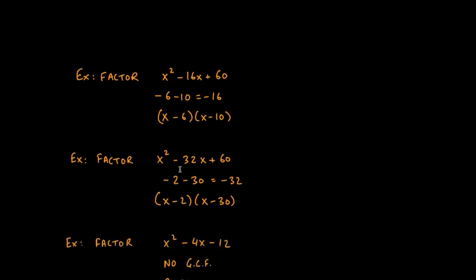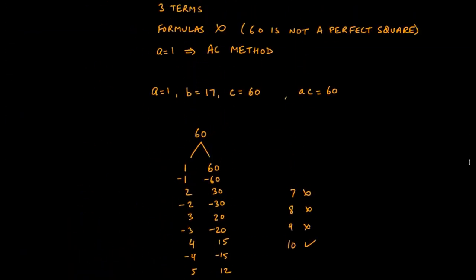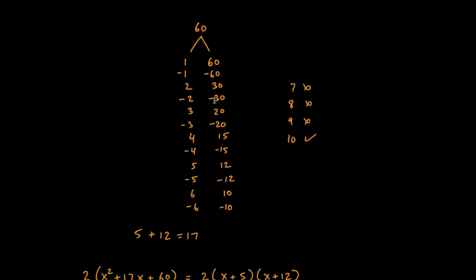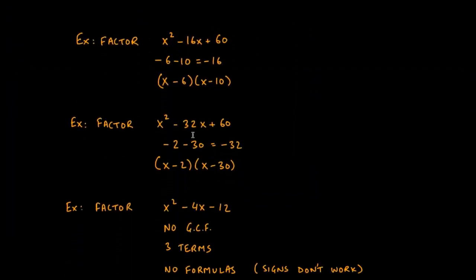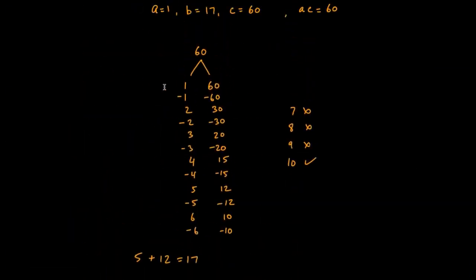For the next one, x² - 32x + 60, we use the same table again. To get -32, we see that (-2) + (-30) = -32. So in one step we have our answer: x² - 32x + 60 = (x - 2)(x - 30). Making these tables takes a bit of time the first time, but once you have it you can keep referencing it again and again instead of guessing and checking every time.